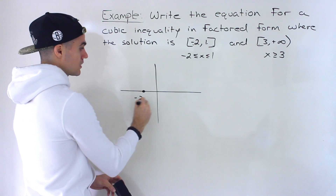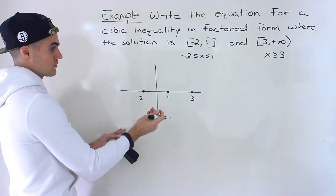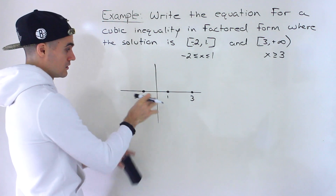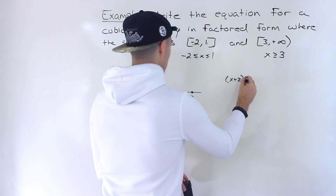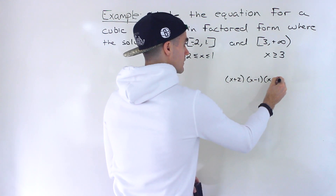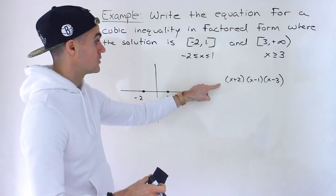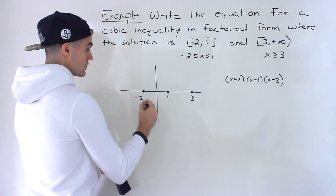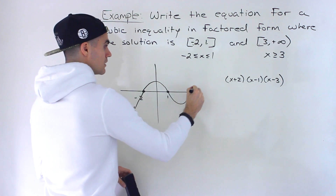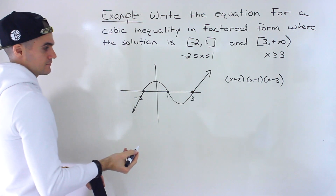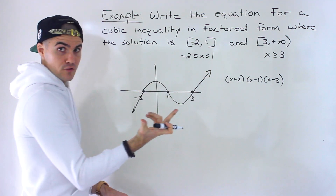So negative two is here, one is here, and three is here. A cubic function with these intercepts has factors (x + 2)(x - 1)(x - 3), and there could be some 'a' value in front — positive or negative. If it's a positive 'a' value, the cubic function will have end behavior going from the third quadrant to the first quadrant.